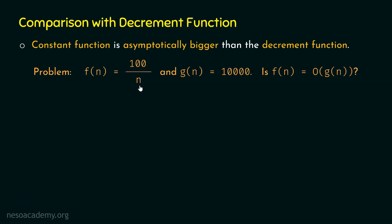Here is the simple problem: f(n) is equal to 100/n, which means f(n) is the decrement function, because 100/n is a decrement function — n is greater than 100, so 100/n is the decrement function. And g(n) is the constant function because g(n) is equal to the constant 10,000. The question is: is g(n) asymptotically bigger than f(n)? In other words, is the constant function asymptotically bigger than the decrement function?